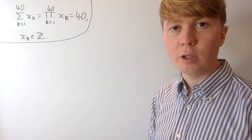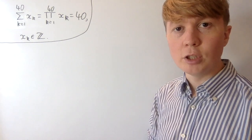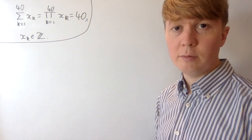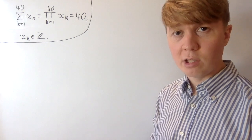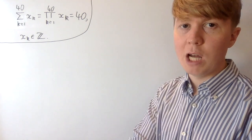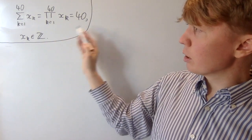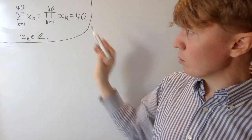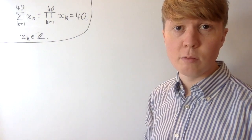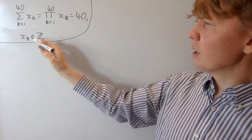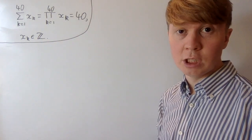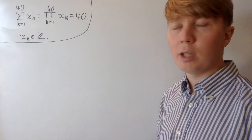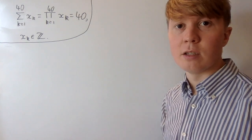We're going to solve this problem where we need to find all the different combinations of 40 positive or negative integers whose sum and product are both equal to 40. We'll find all the different sets of 40 integers which work, but we're not interested in finding all the different orderings. The fact that the product is equal to 40, and given that our x_k's are all positive or negative integers, is actually really restrictive — it tells us that all of our numbers have to be positive or negative factors of 40.